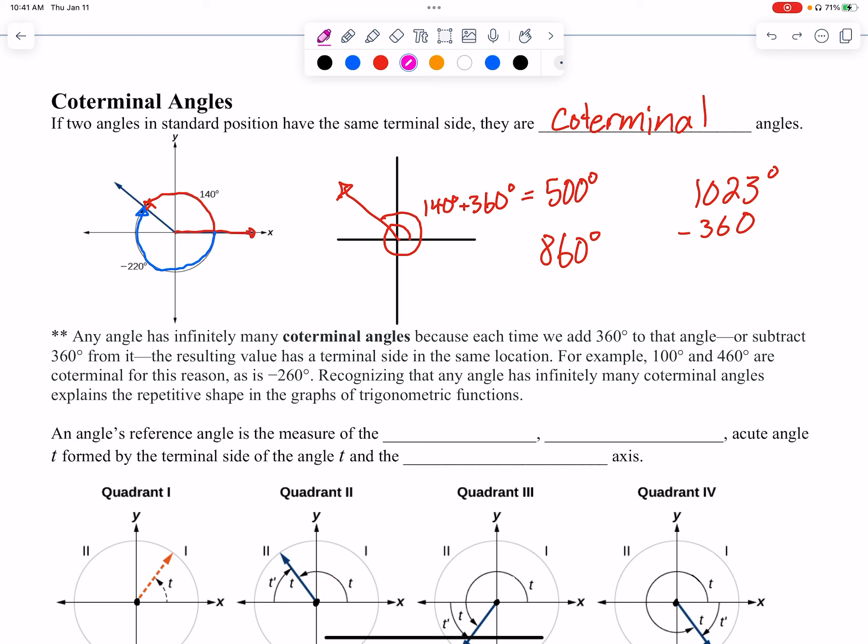So adding 360° will give me a new coterminal angle, because if I add 360°, I'm still facing the same direction after I make my rotation. So I'll read this paragraph. Any angle has infinitely many coterminal angles. I could just keep adding 360° to that angle or subtract 360° from it. The resulting value has a terminal side in the same location.